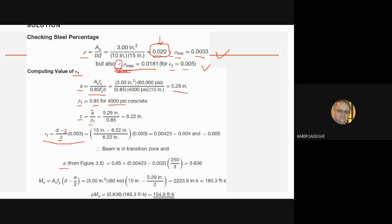Pay attention: in a previous final exam, F'c was given as more than 4,000 psi — in that case β₁ is not 0.85; you must calculate it from the formula. If F'c is 4,000 psi or less, β₁ = 0.85. If it is greater, you must find β₁ from the given formula. Then, C = A / β₁ = 6.22 inches.